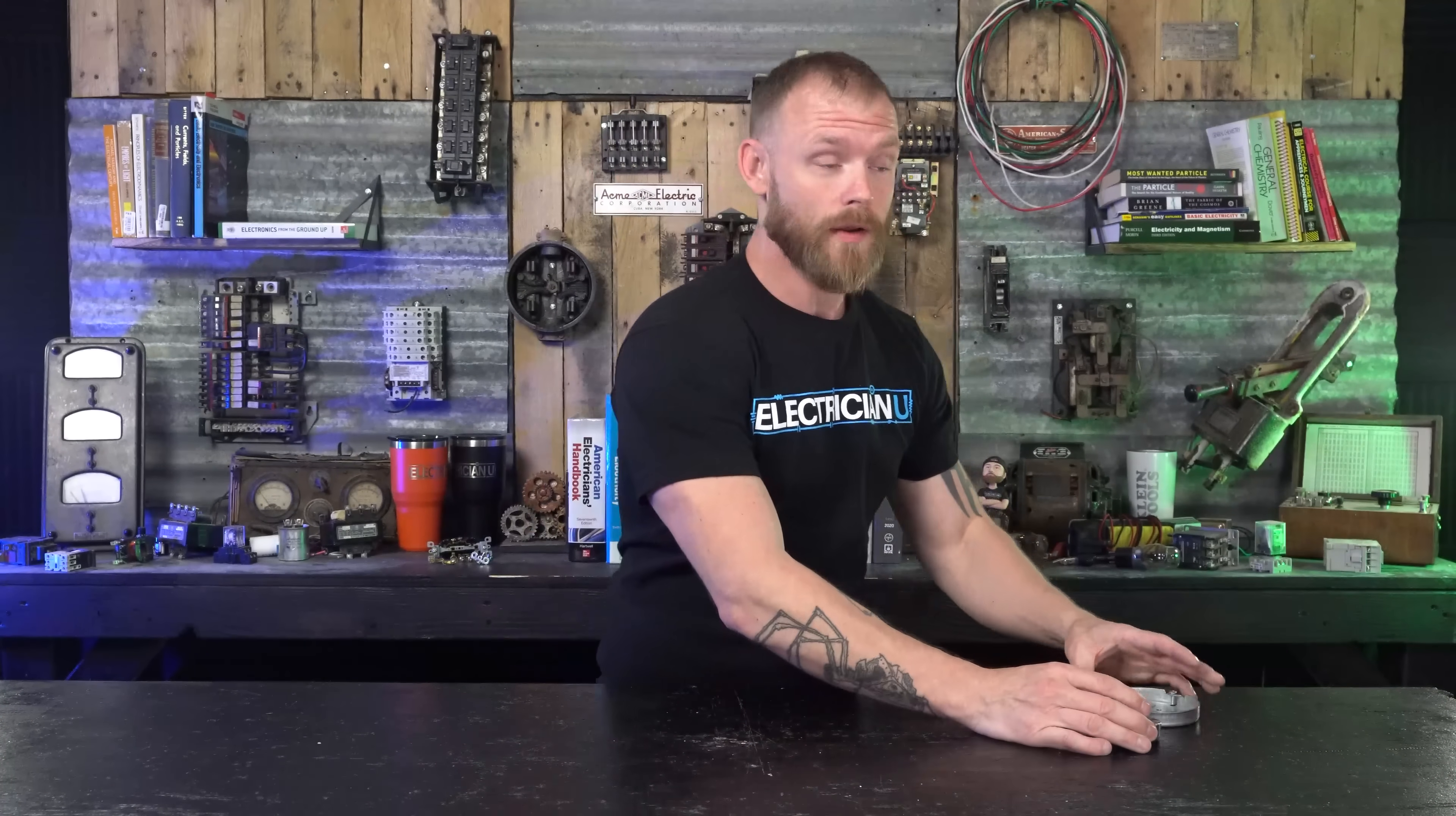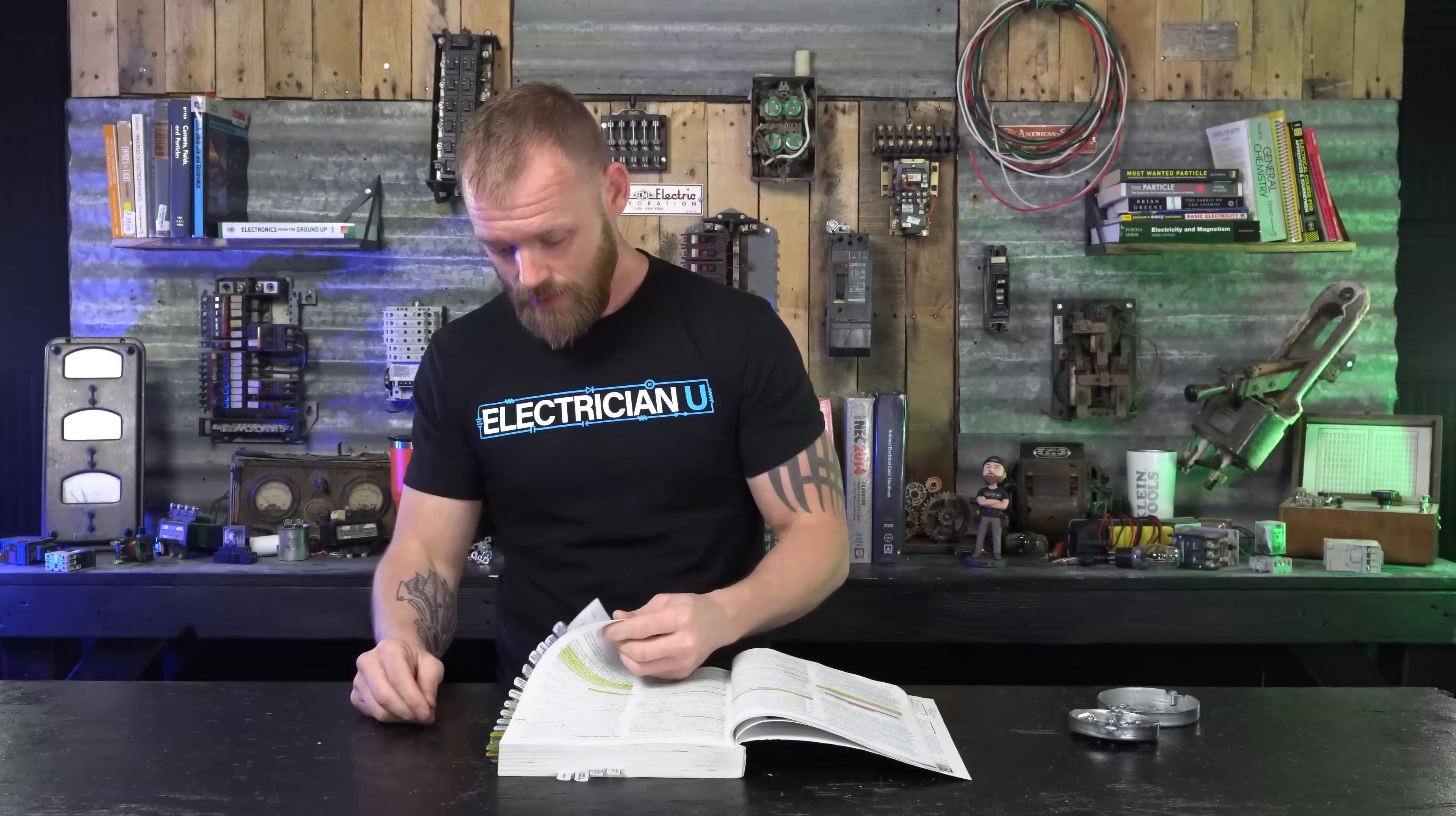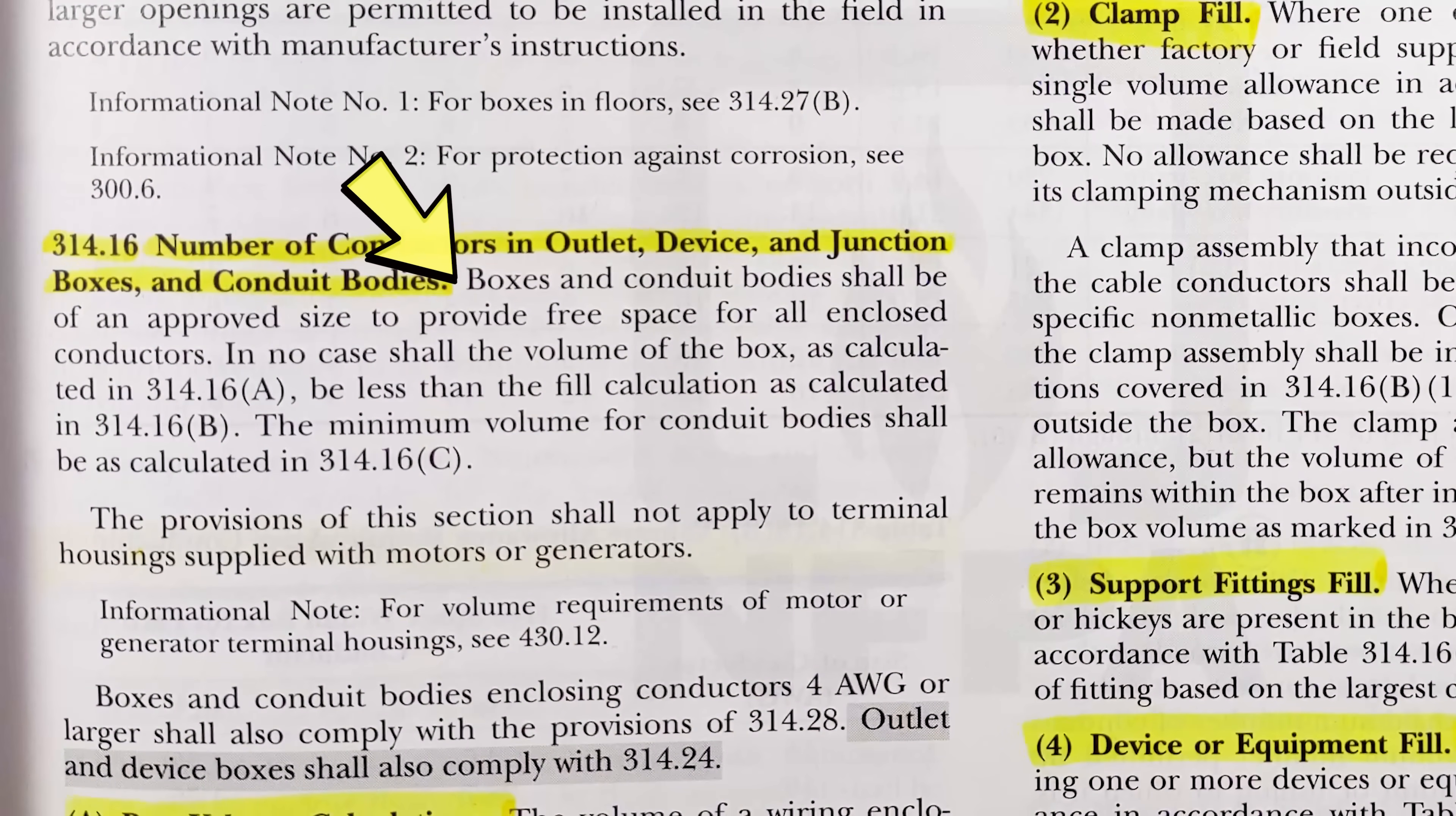Let's first look at what the National Electrical Code says about this. We're looking in 314.16, and it shouldn't matter what year in the last few years, but I'm looking at a 2020 NEC. It says boxes and conduit bodies shall be of an approved size to provide free space for all enclosed conductors. In no case shall the volume of the box be less than the fill calculation as calculated in 314.16b.